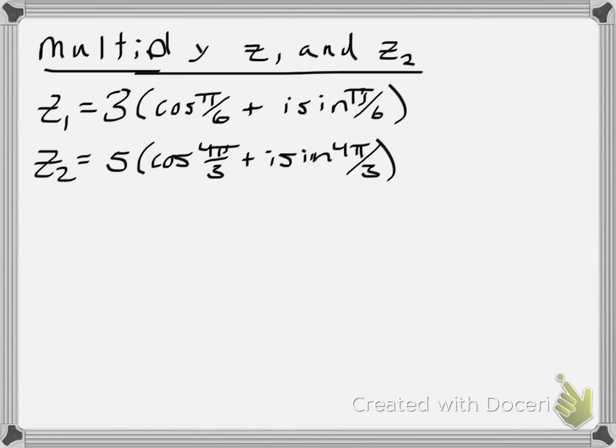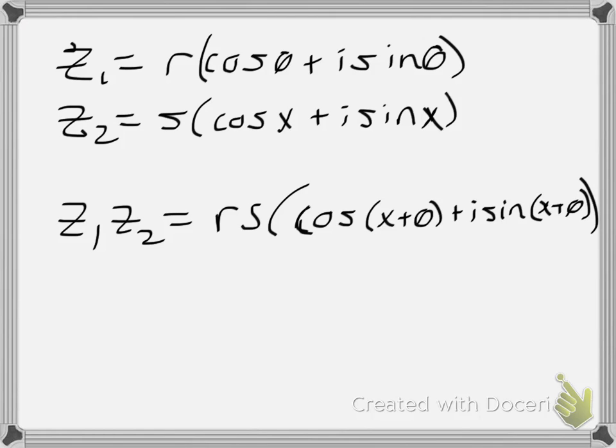In general, I want to think of z1 as r cosine of theta plus i sine of theta, and z2 as just representing a different value for that distance from the center to the point, x representing just a different angle. Now we could go through and foil it out and use our formulas to simplify it. Simply put, this is a quicker method of doing so.